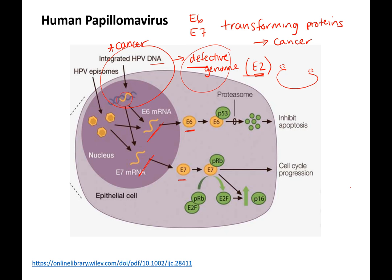E6 binds a host protein called p53, a proto-oncogene that normally promotes apoptosis when there is DNA damage. If E6 is binding p53 and degrading it or preventing it from working, you prevent apoptosis — meaning cells with DNA damage can go on and replicate. That is a hallmark of cancer.